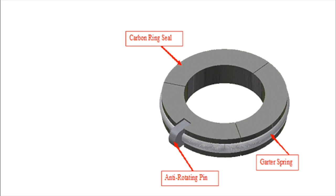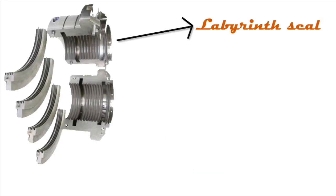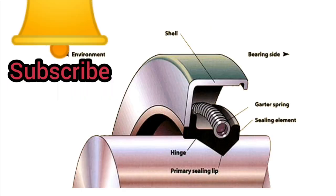The carbon ring is made up of three segments, butting together tightly under the pressure of a garter spring. The carbon rings are free floating in the housing and an anti-rotating pin is used to prevent the rotation of carbon ring seal. Due to the self-lubrication properties of the carbon rings, they maintain a close clearance with the shaft. For larger steam turbines, labyrinth seals are used as shaft seal.